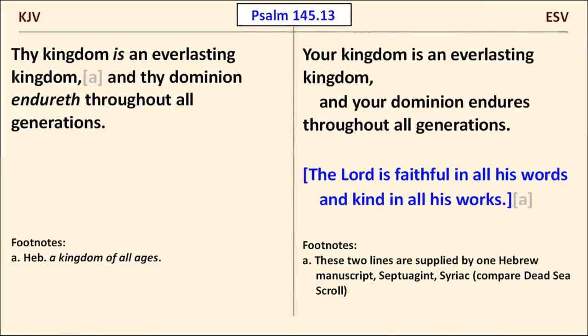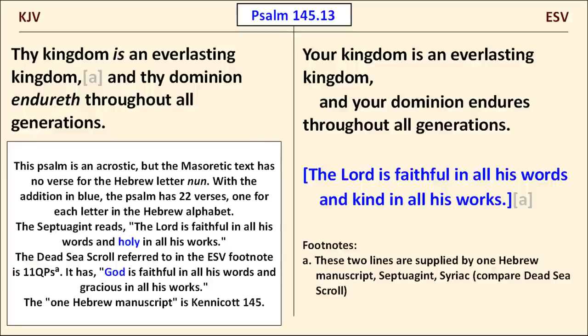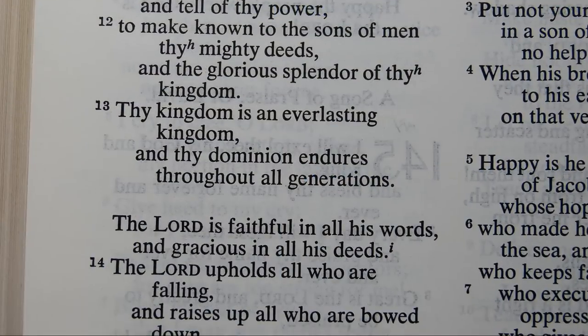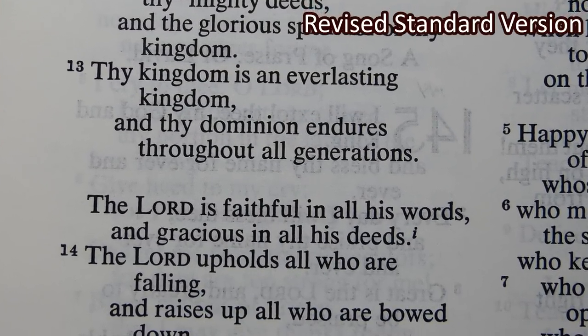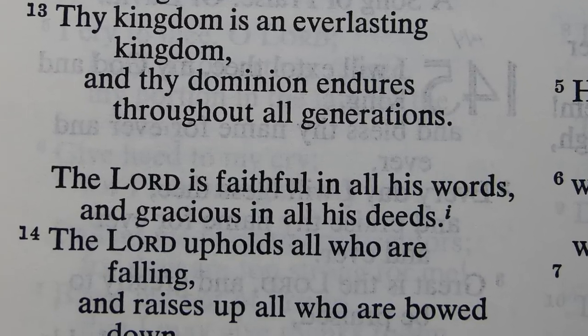Psalm 145:13 is longer in the ESV than in the KJV because the ESV includes material from the Septuagint. Psalm 145 is an acrostic, with each verse beginning with a different letter of the Hebrew alphabet, but the verse for the letter Nun is missing in the Masoretic text. The NET Bible observes that scholars are divided as to the originality of this verse. It's possible the Nun verse was deliberately omitted by the author and that later scribes felt compelled to invent it to round things off. The Revised Standard Version included the material without enclosing it in square brackets, while the ESV uses square brackets to cast some doubt on its authenticity.